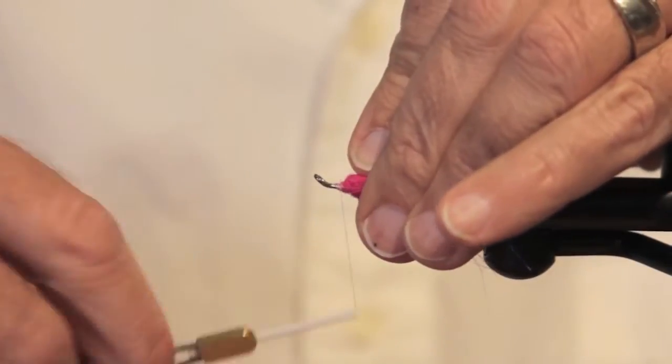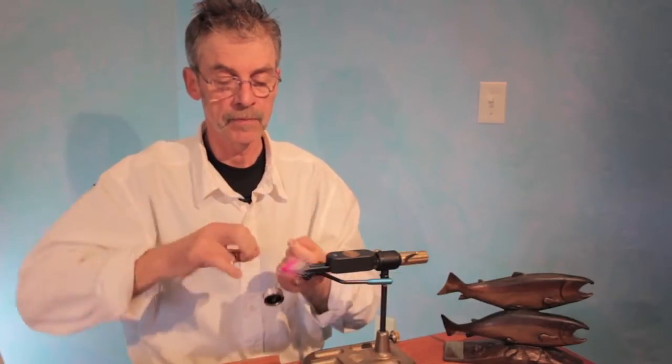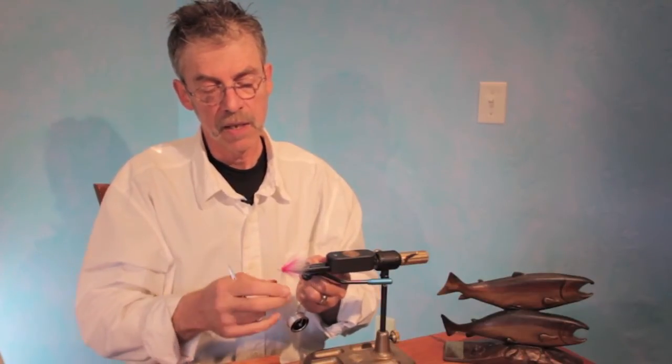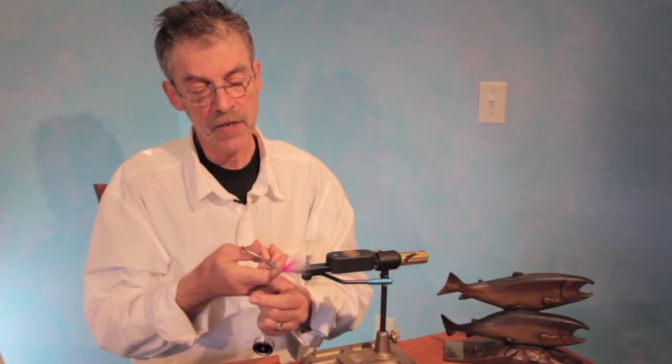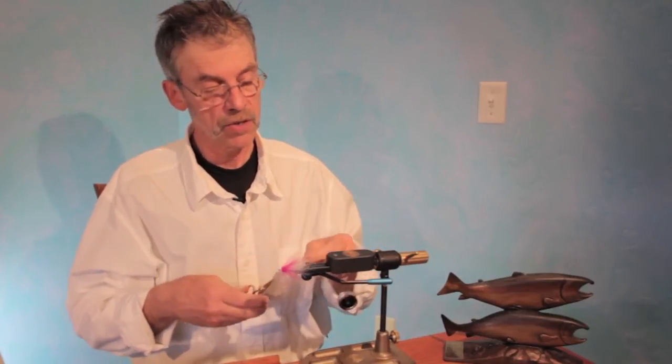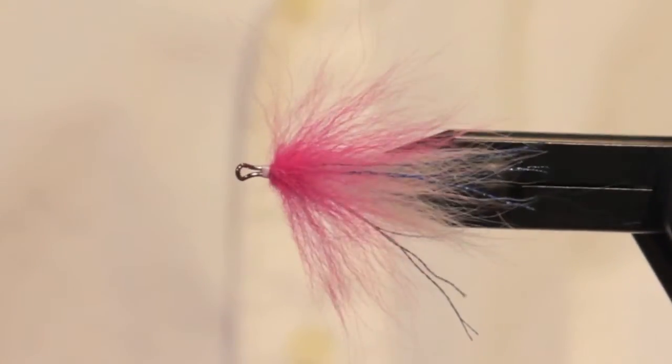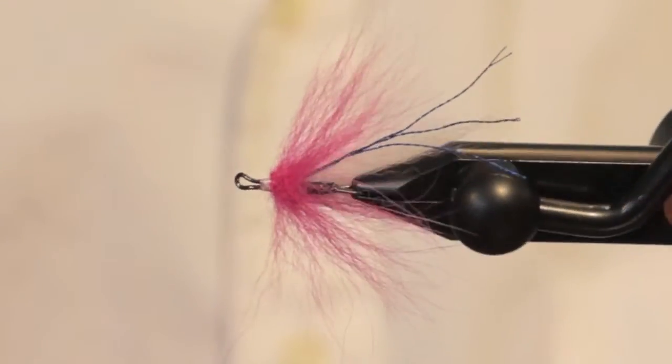Finish this off. So if I spin a pink hair collar at the head of a fly, I try to use a light colored thread so the black doesn't show through. So there you have your arctic fox spun in a loop.